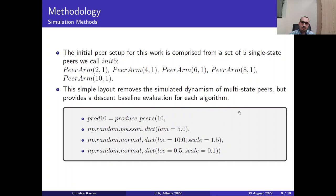Next, we have the simulation methods. The initial method is to create a peer setup for this work, which is comprised from a set of five single-state peers, we name INIT5. So we create some peers which are static, single-state. And then we have this simple layout.